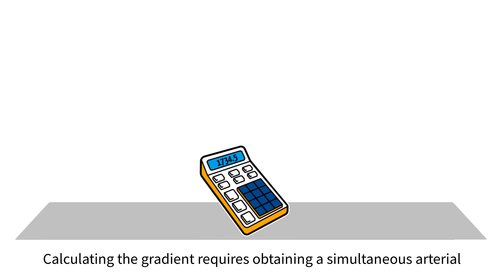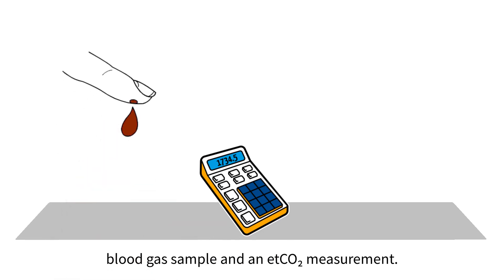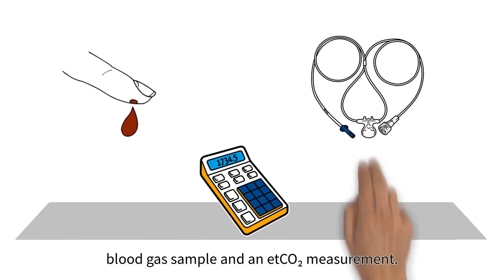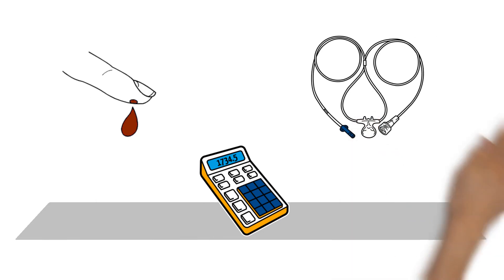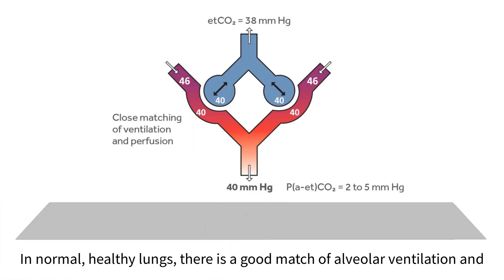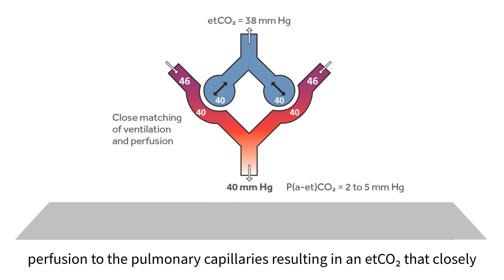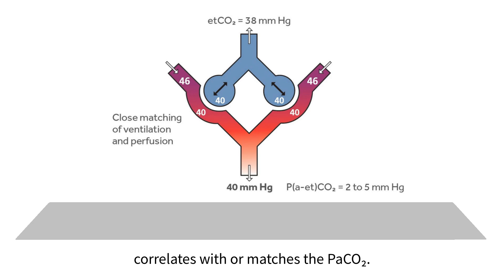Calculating the gradient requires obtaining a simultaneous arterial blood gas sample and an ETCO2 measurement. In normal, healthy lungs, there is a good match of alveolar ventilation and perfusion to the pulmonary capillaries, resulting in an ETCO2 that closely correlates with or matches the PaCO2.